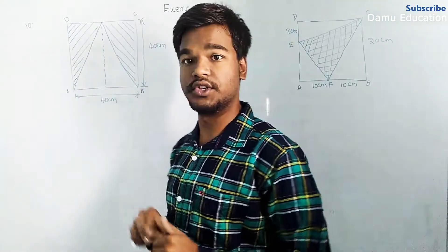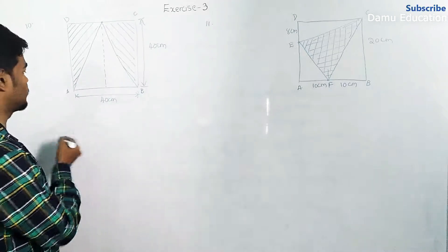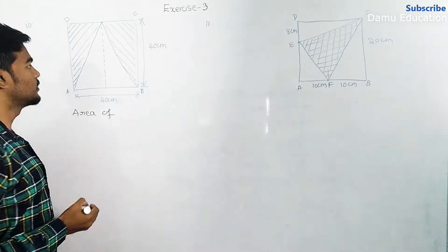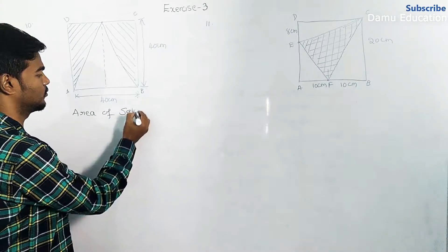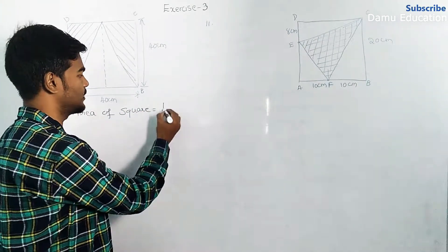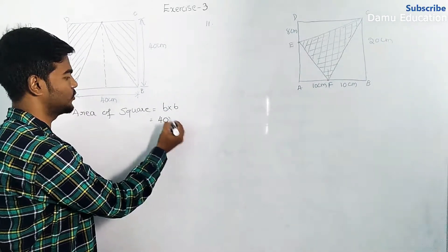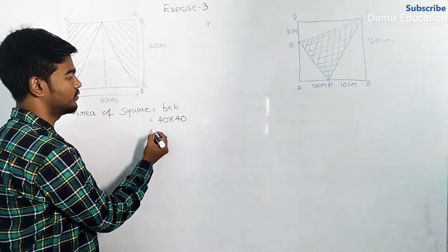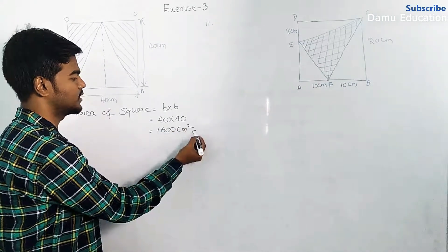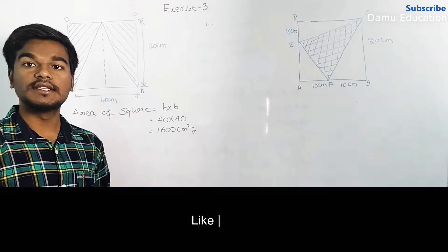First, find the area of the square — that is side into side. So 40 into 40 equals 1600 centimeter square. That is the area of the square.